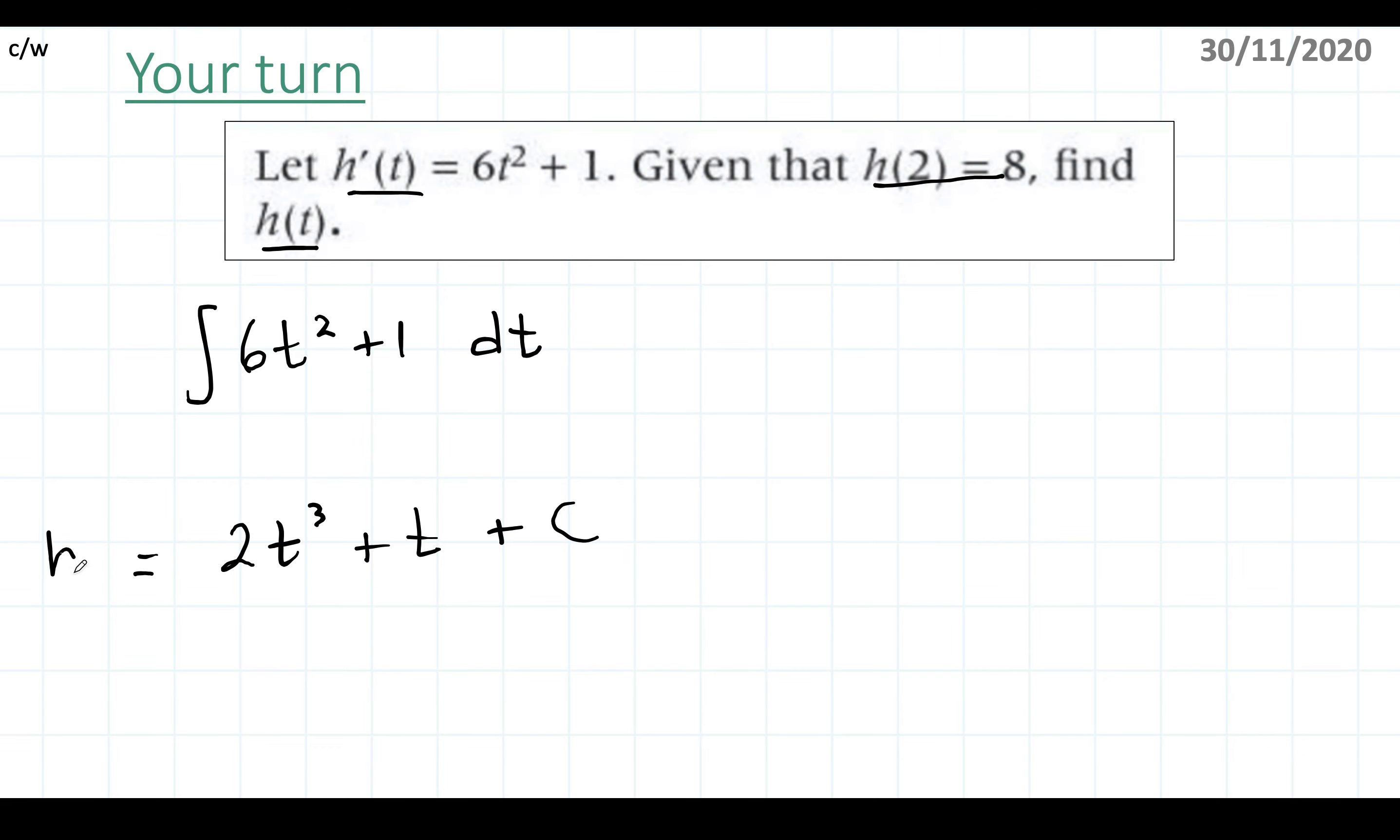Now we know that this is h of t, and we know that at 2 it's equal to 8. So if I substitute h of 2: 2 times 2 cubed plus 2 plus c equals 8.